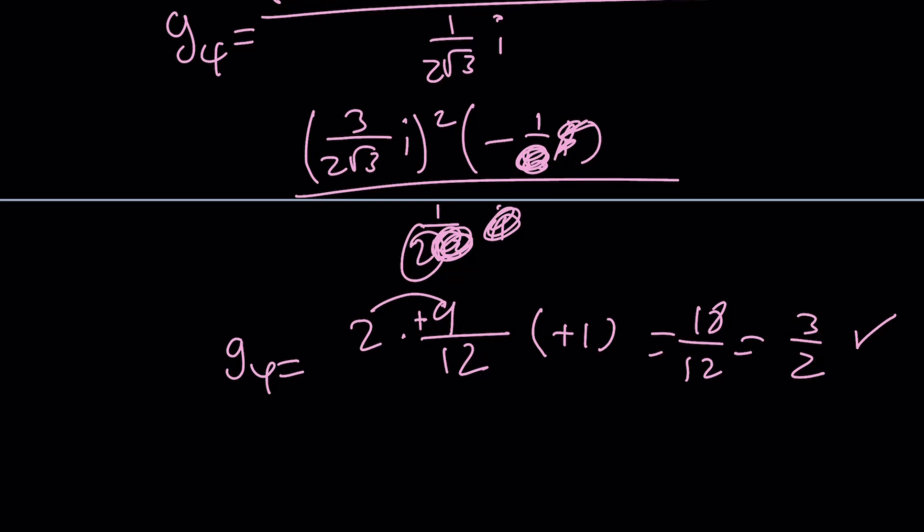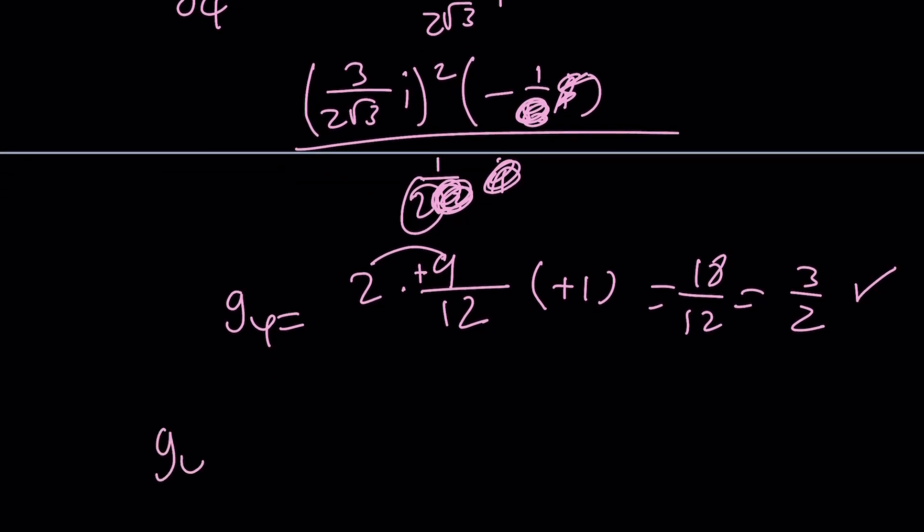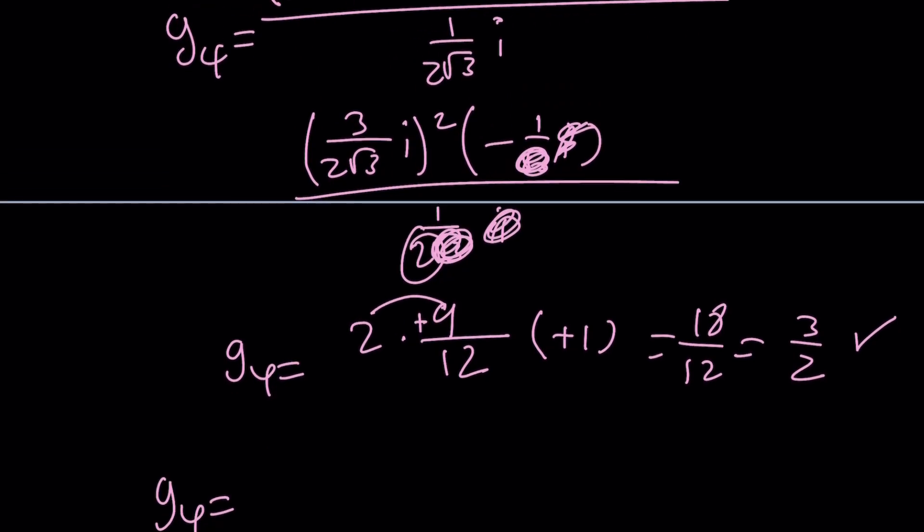And then from here, you can find the other values by using the other variables. The other values, such as negative 1 over 2 root 3i. Remember that?